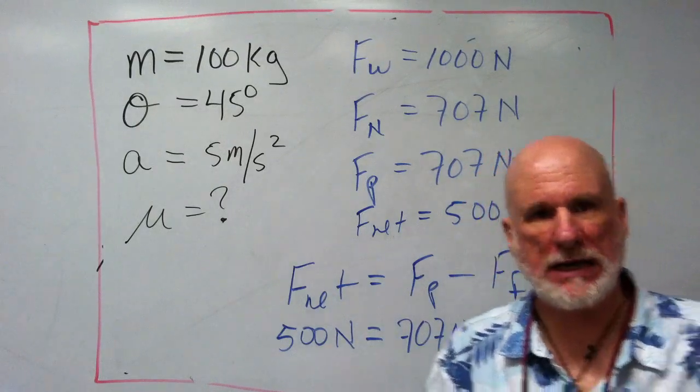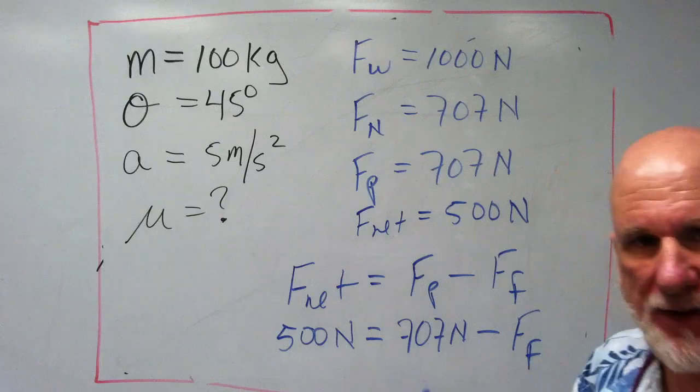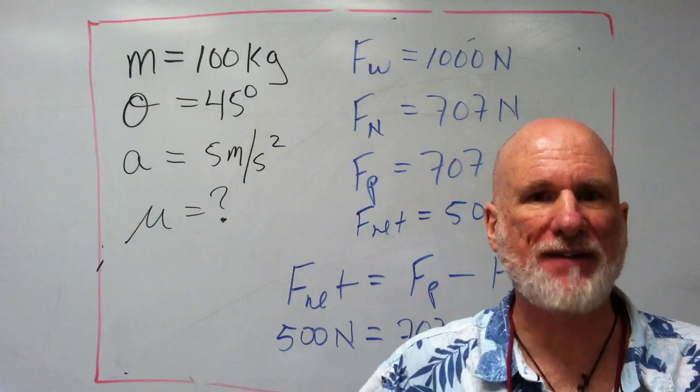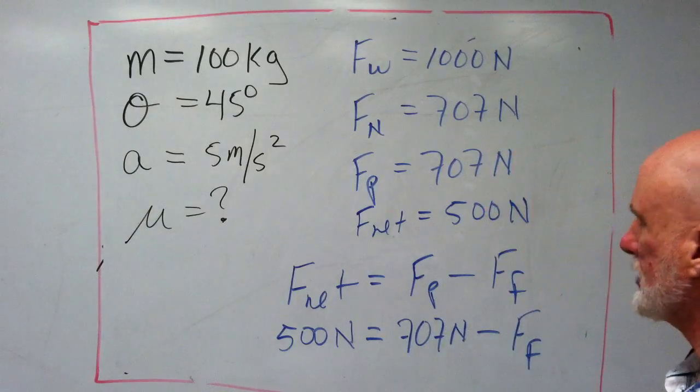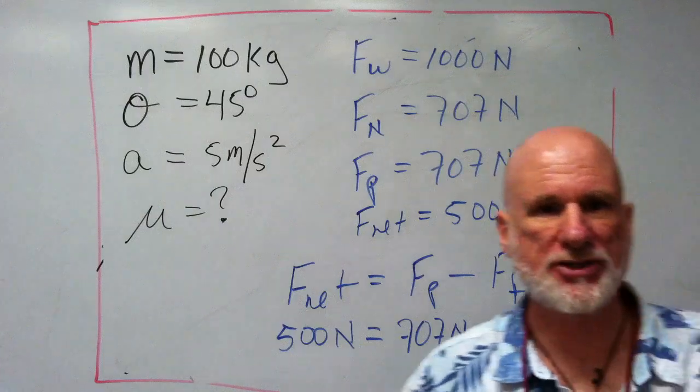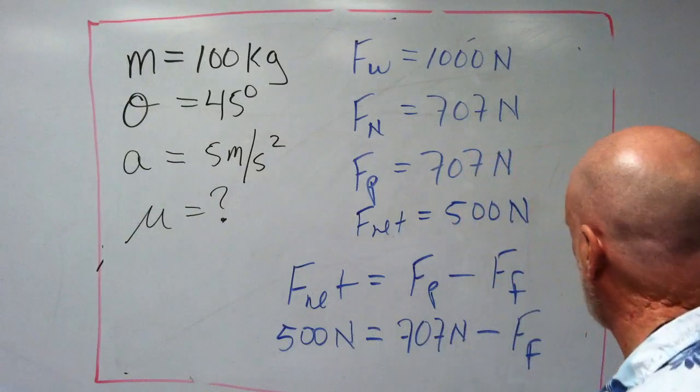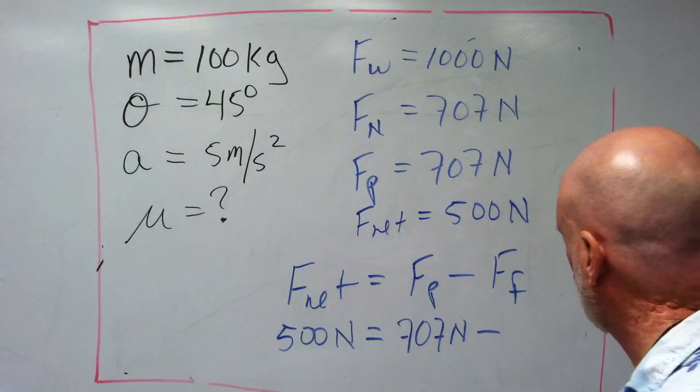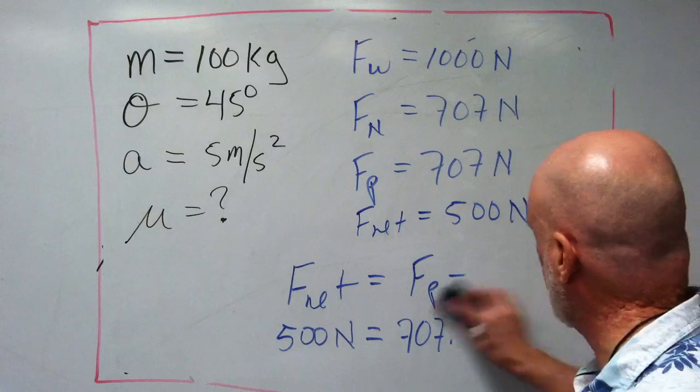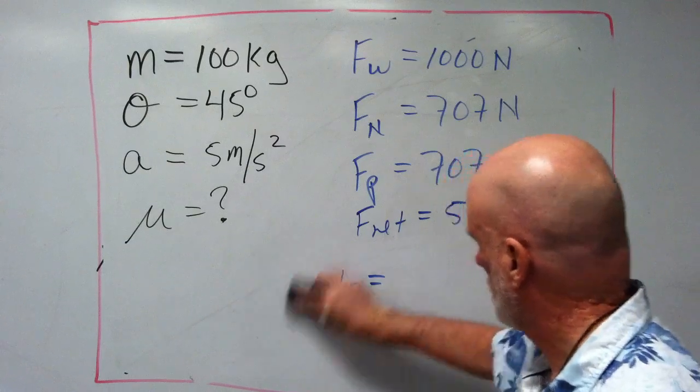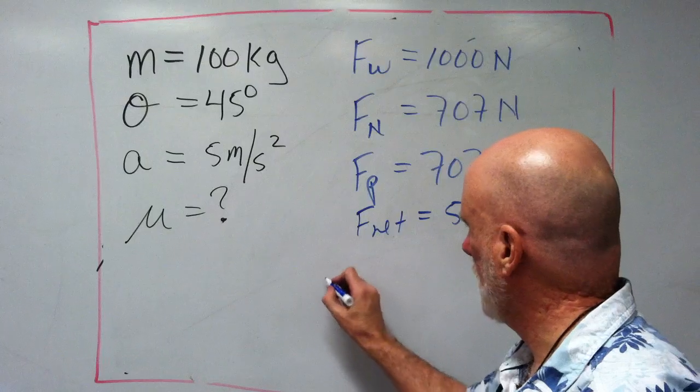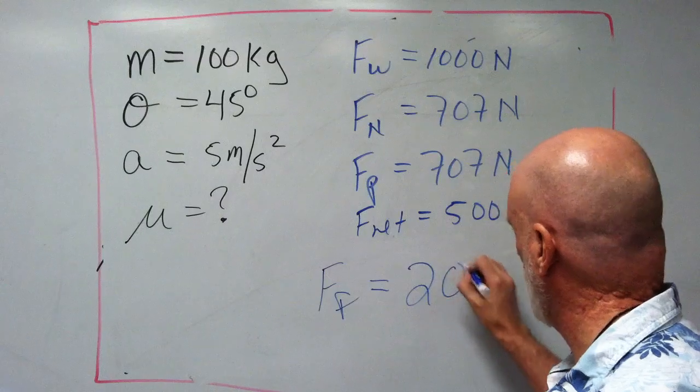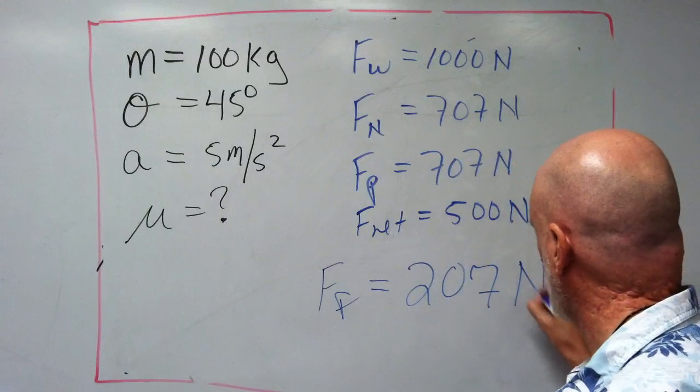We can say to ourselves, well, what number do I subtract from 707 to equal 500? What number? That's going to be 207. 207. So, I can say that the friction is going to be 207 newtons.